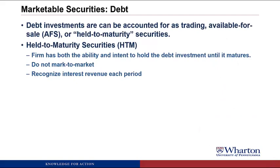Now we're going to talk about marketable securities where they're debt securities — when you're buying the bonds of another company. Debt investments can be accounted for as trading and available for sale, using the same methods we've seen so far, or they can be done under a third method called held to maturity. Under held to maturity, or HTM, the firm has to have both the ability and the intent to hold the debt investment until it matures. So if it's a 5-year bond that you buy, you have the intent and ability to hold it for 5 years until the bond matures.